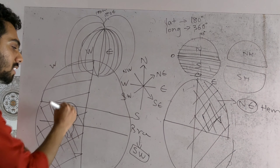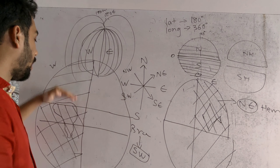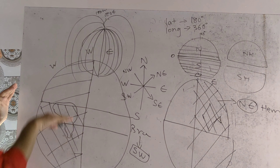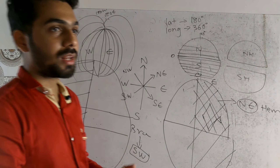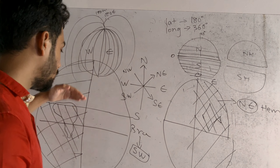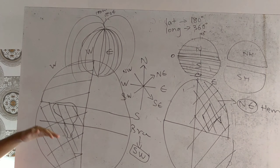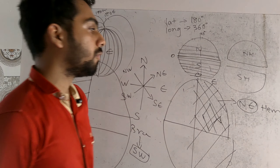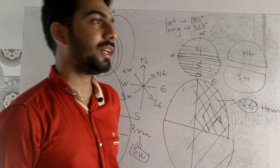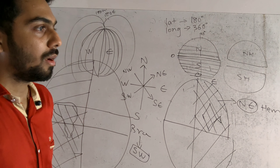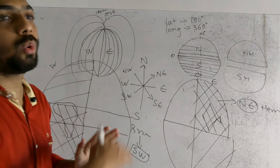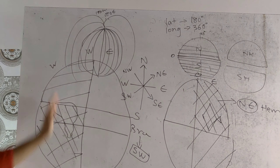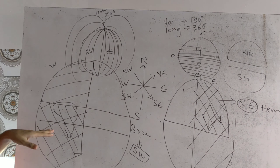Though the equator passes through the northern part of Brazil, about 90 to 95% of the part of Brazil is towards the southern hemisphere. The southern hemisphere is very important for Brazil as far as its climatic factors are concerned. So the differentiation: India is located above the equator towards the right side — the north-eastern hemisphere. Brazil is located towards the left side and below — the south-western hemisphere.